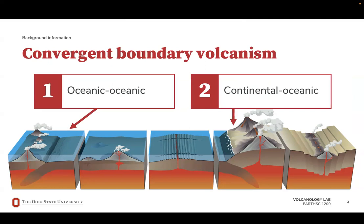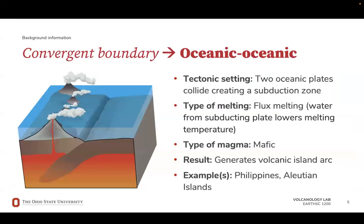Convergent boundaries occur when two plates collide. We have two subtypes of convergent boundaries that result in volcanism. First, we'll take a closer look at oceanic-oceanic convergent boundaries. When two oceanic plates collide, the older, denser oceanic plate will subduct beneath the younger, less dense oceanic plate. The water from the subducting oceanic plate is squeezed out into the hot upper mantle. Water lowers the melting temperature of rock, allowing for magma to form underneath the overriding plate. This type of magma generation is known as flux melting. The difference in density causes the magma to rise to the surface, generating volcanic island arcs. Because both plates involved are oceanic and therefore mafic, the magma generated in these settings is also mafic. Examples of this tectonic setting can be seen in the Philippines and the Aleutian Islands.